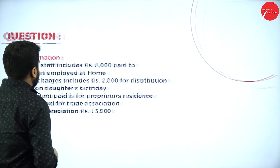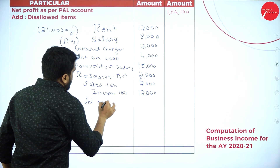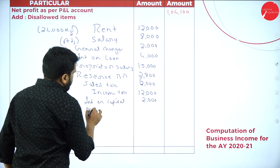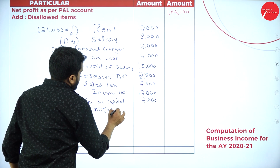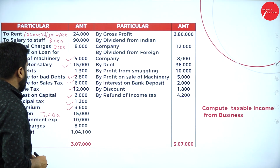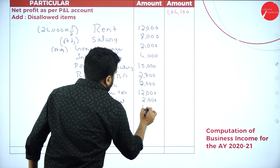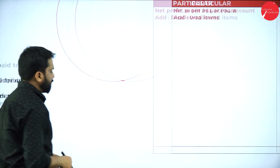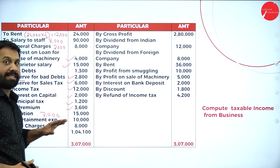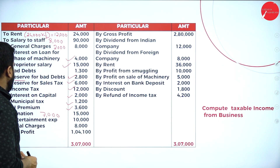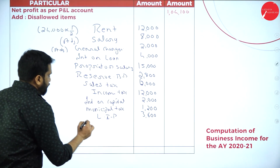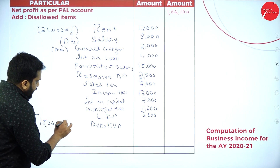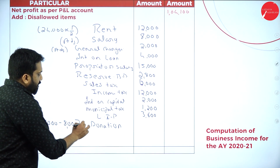Adding further disallowed items: interest on capital ₹2,000; municipal tax ₹1,200; LIP (Life Insurance Premium) ₹3,600; and donation — out of ₹15,000, ₹8,000 is for trade association which is business-related, so the balance of ₹7,000 is the personal/disallowed portion we take. These are all your disallowed expenses.